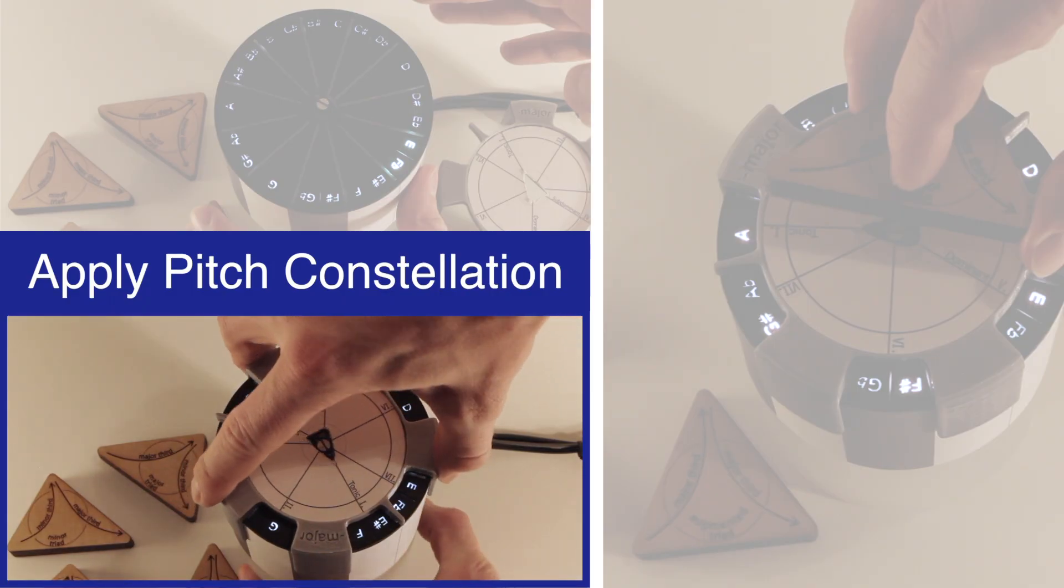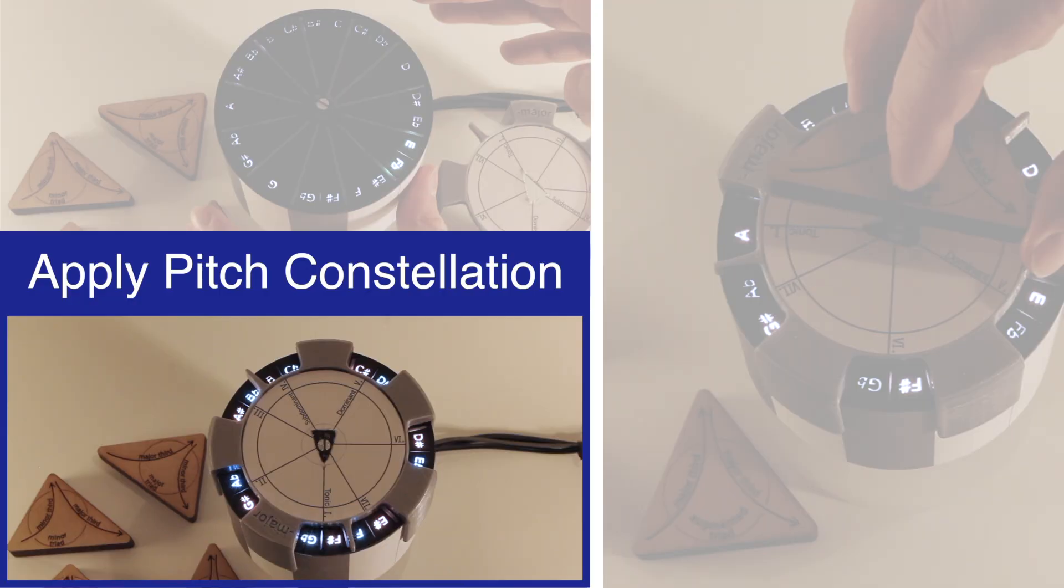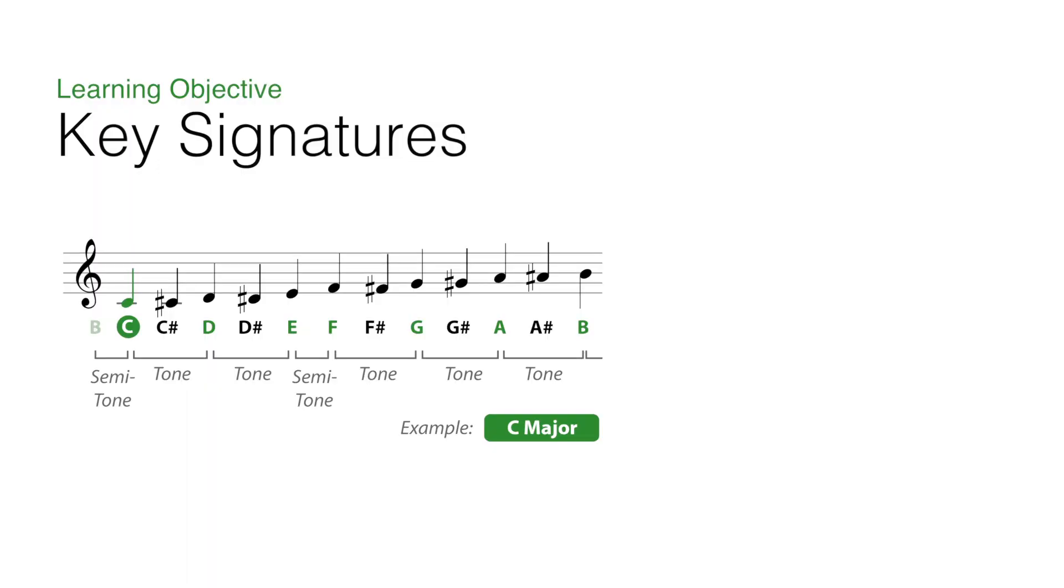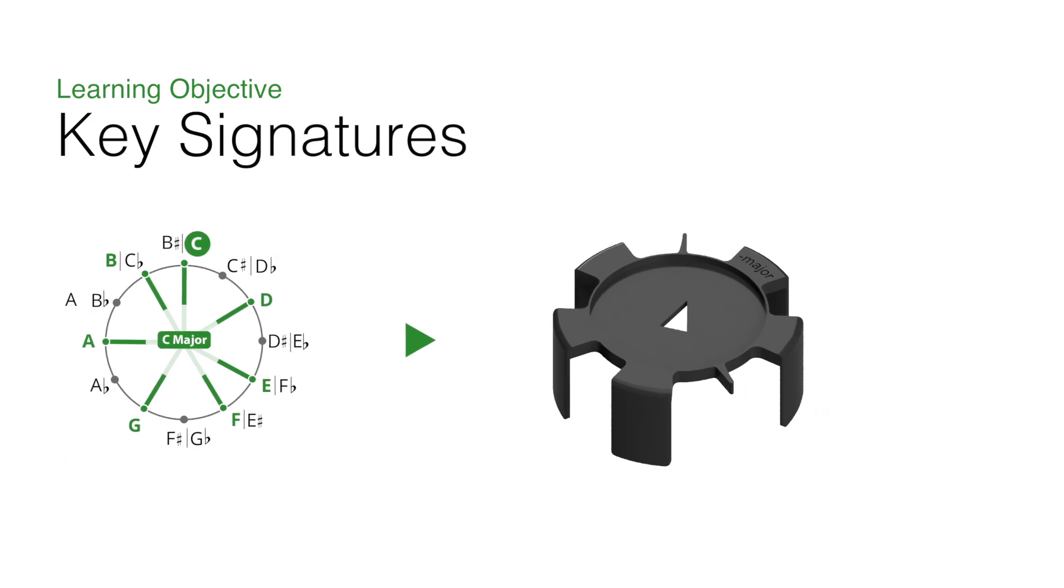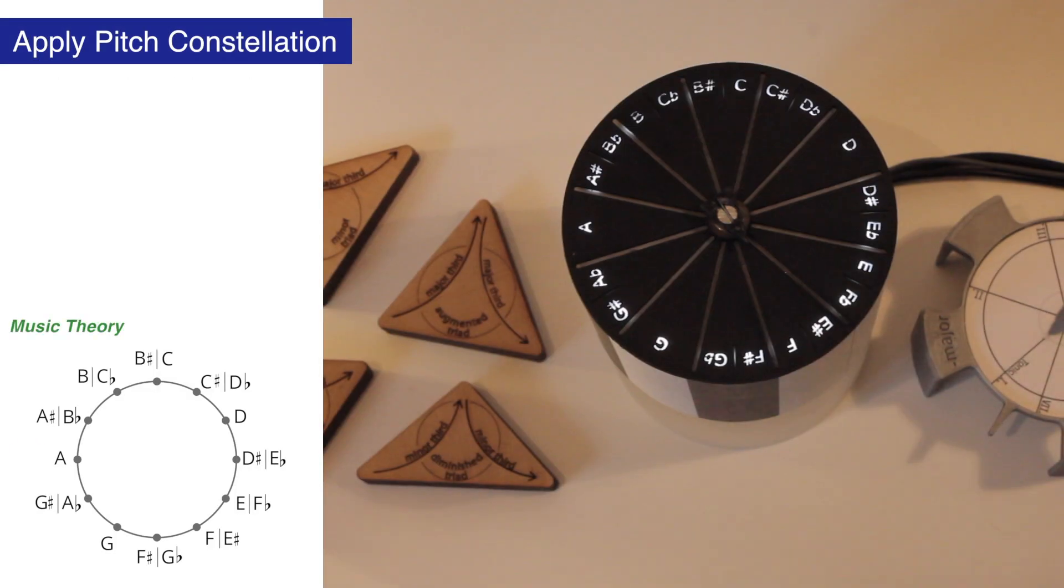Further, key signatures like major or minor keys play an important role. Therefore, we build on the circle pitch constellation and derive a physical major scale cap that can be stacked on the chromatic cylinder.